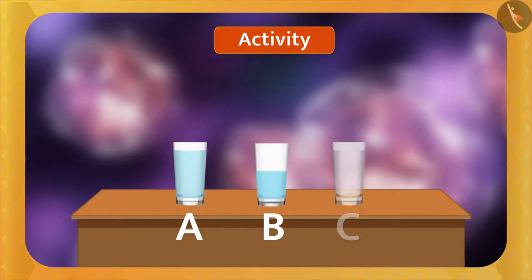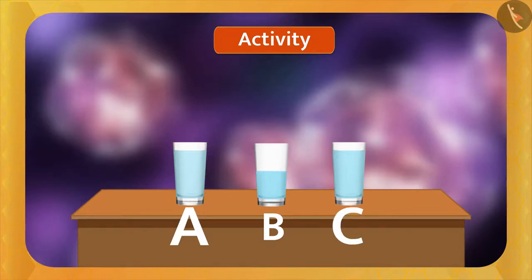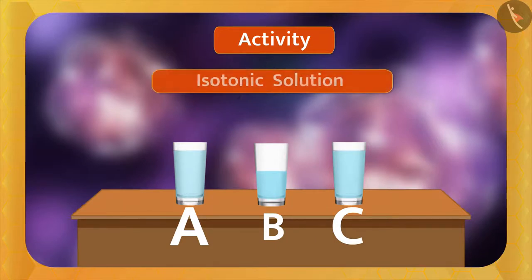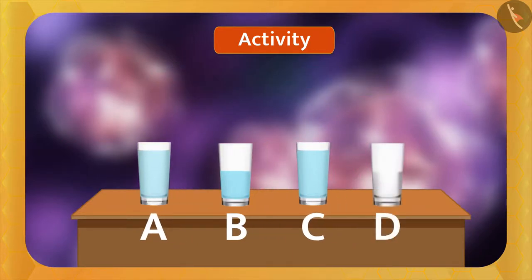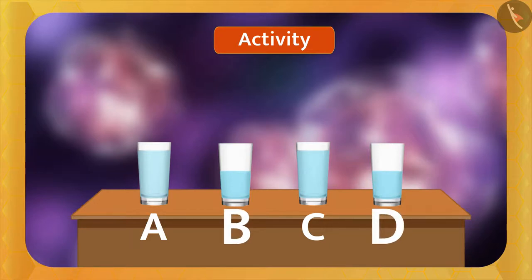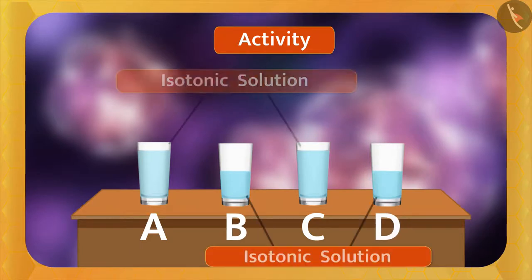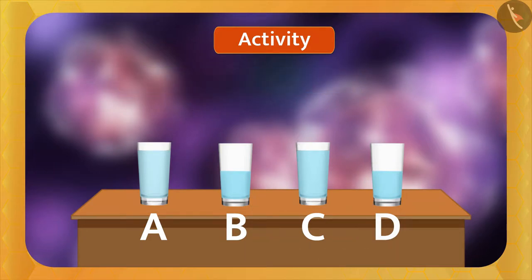Now take another glass C with the same amount of water and sugar or salt as glass A. Since both A and C have the same water concentration, they are called isotonic solutions to each other. Similarly, take glass D with the same amount of water and salt as glass B — glass B and glass D are also isotonic solutions to each other.